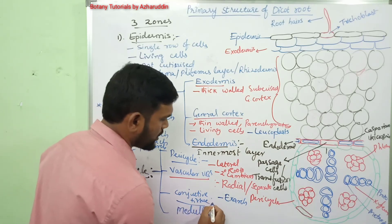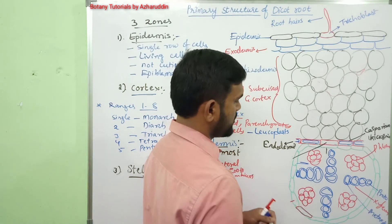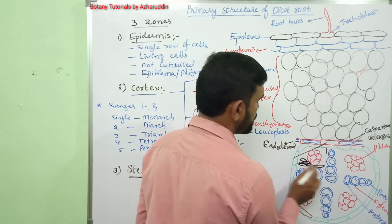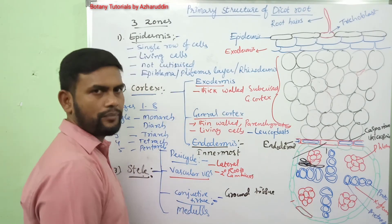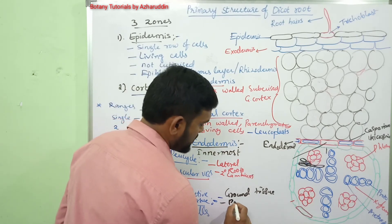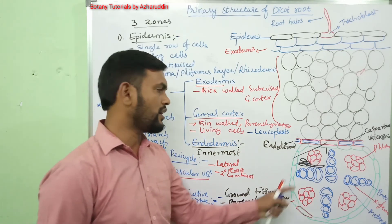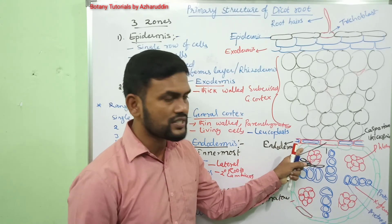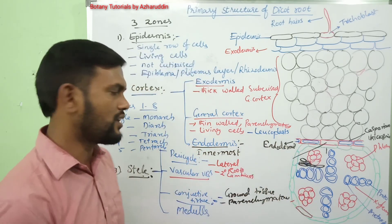Conjunctive tissue is the ground tissue extending between xylem and phloem. It is generally parenchymatous, sometimes sclerenchymatous. This tissue is useful in the storage of food materials and is also involved in secondary growth — during secondary growth, conjunctive tissue along with pericycle produces secondary cambium, which in turn produces secondary xylem and secondary phloem.